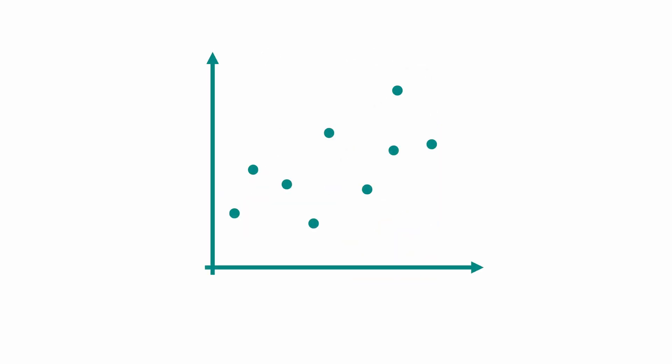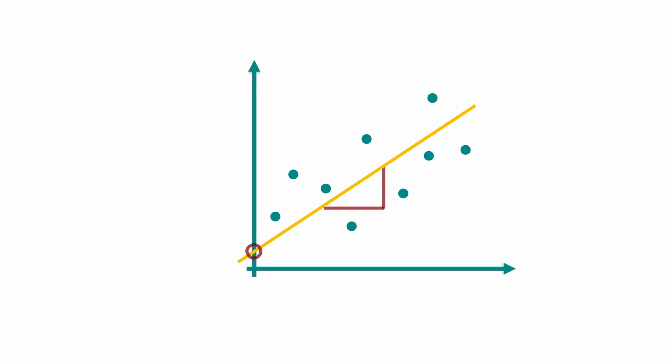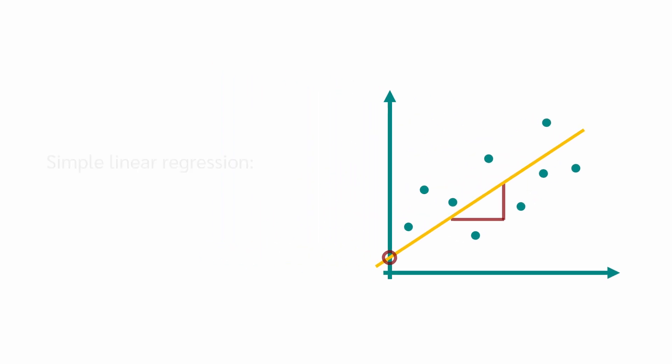Or if we have nine data points and want to fit a simple linear regression, we need to estimate two parameters, the slope and the intercept. That costs two degrees of freedom. Therefore, for a simple linear regression, the degrees of freedom are the number of data points minus 2.